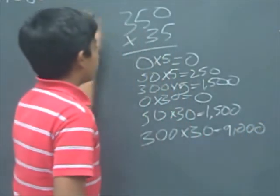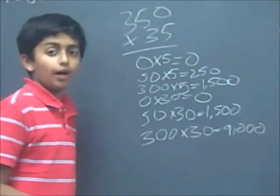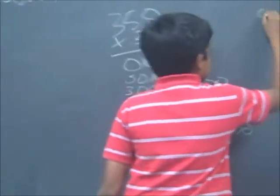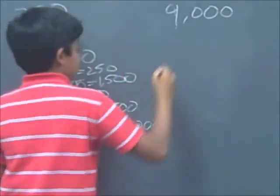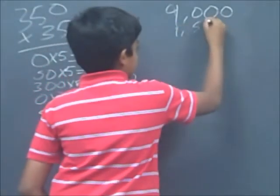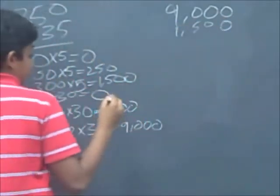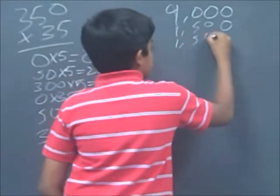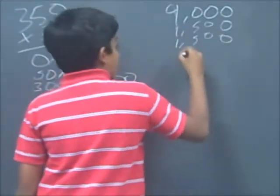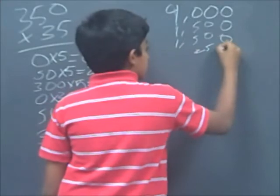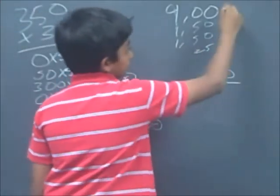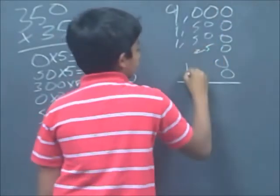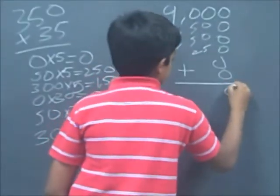Now that you have multiplied all these numbers by 3 and 5, you have to add those all up. Plus 1,500, you have to add all these numbers up.